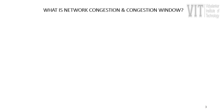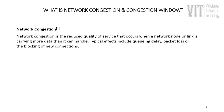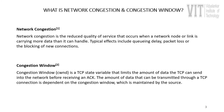Network congestion is nothing but the reduced quality of service that occurs when a network node or link is carrying more data than it can handle. The typical effects include queuing delay, packet loss, or the blocking of new connections. The congestion window is a TCP state variable that limits the amount of data TCP can send into the network before receiving an acknowledgement. The amount of data that can be transferred is dependent on the congestion window, which is maintained by the source.